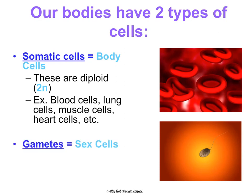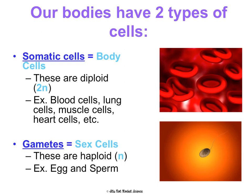The other type of cells are gametes, which are sex cells. These are haploid — they only have half the amount of DNA, so they have one set of chromosomes. This is egg in females and sperm in males. And meiosis is the process of creating sex cells. We've already learned about mitosis, which is how the body makes body cells, but today we're going to learn how to make sex cells.